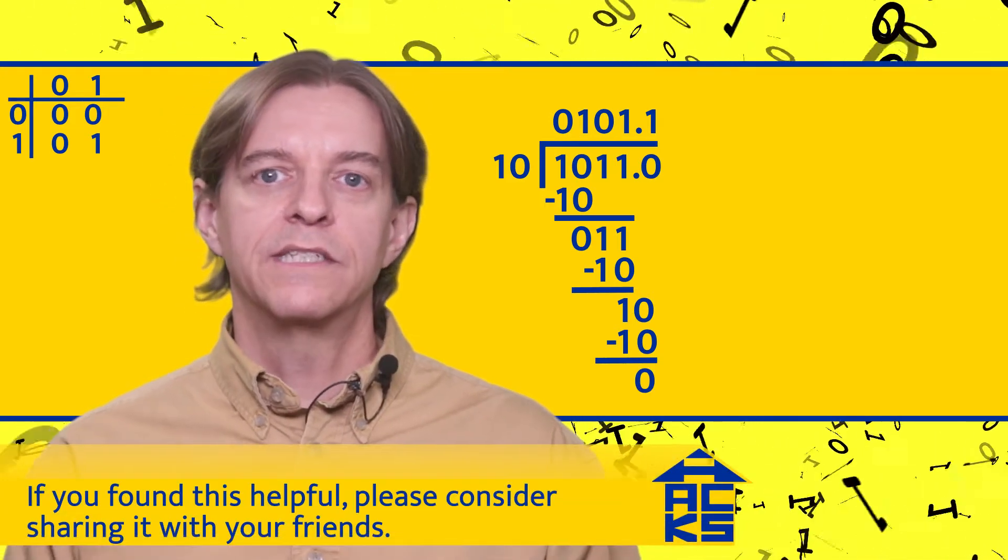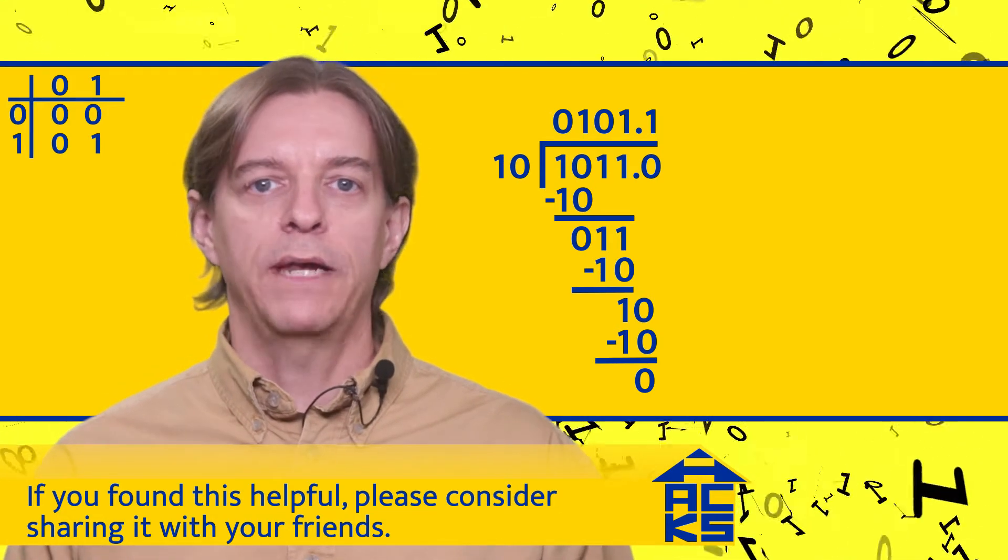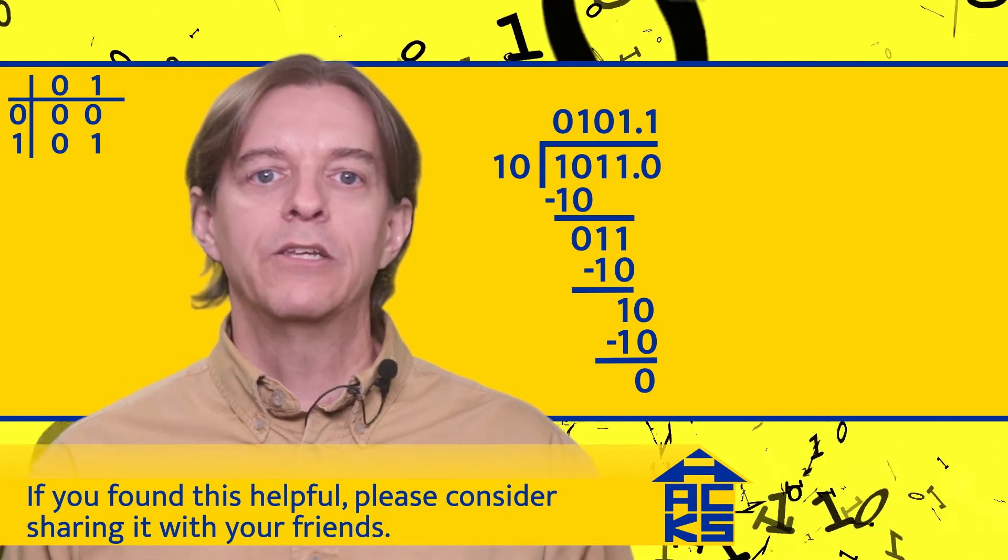If the result was greater than zero, we'd bring down another zero and continue expanding the radix part of the quotient, just like we do when working in decimal.